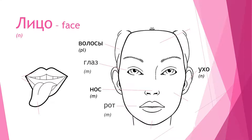Next, we have ухо. That means ear, and it is neutral. And finally, язык. That means tongue, and it actually has two meanings — it also means language, just like in English 'tongue' can sometimes mean language. If you've ever heard the term 'mother tongue,' it means native language. So язык means tongue or language, and it is male.